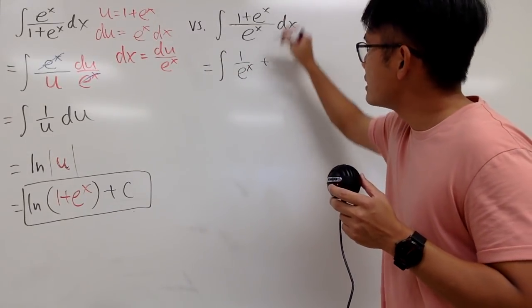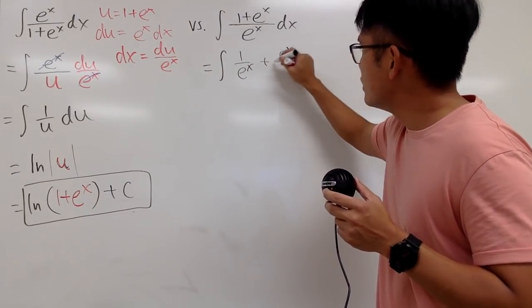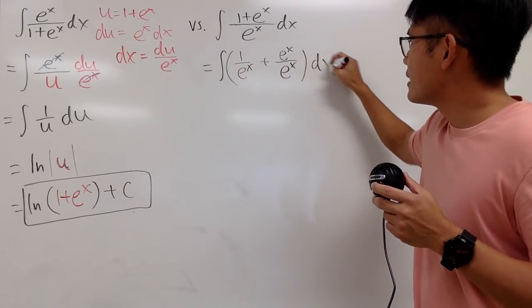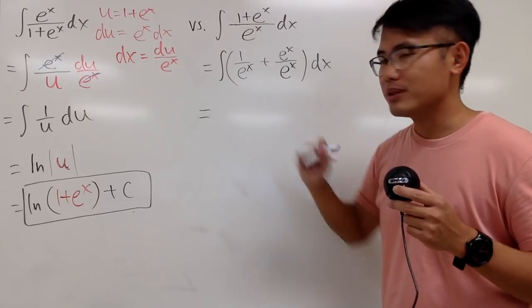So this is integral 1 over e^x. And I will add it with e^x over e^x. And, of course, don't forget the dx.